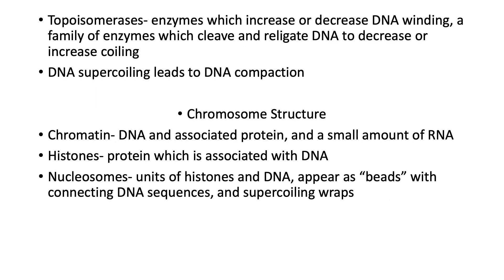Topoisomerases are enzymes which increase or decrease DNA winding — a family of enzymes that cleave and religate DNA to increase or decrease coiling. If you have DNA supercoiling, you get compaction of the DNA. This is readily seen microscopically as very noticeable black dots, and this is where you can see the DNA coiling on itself.